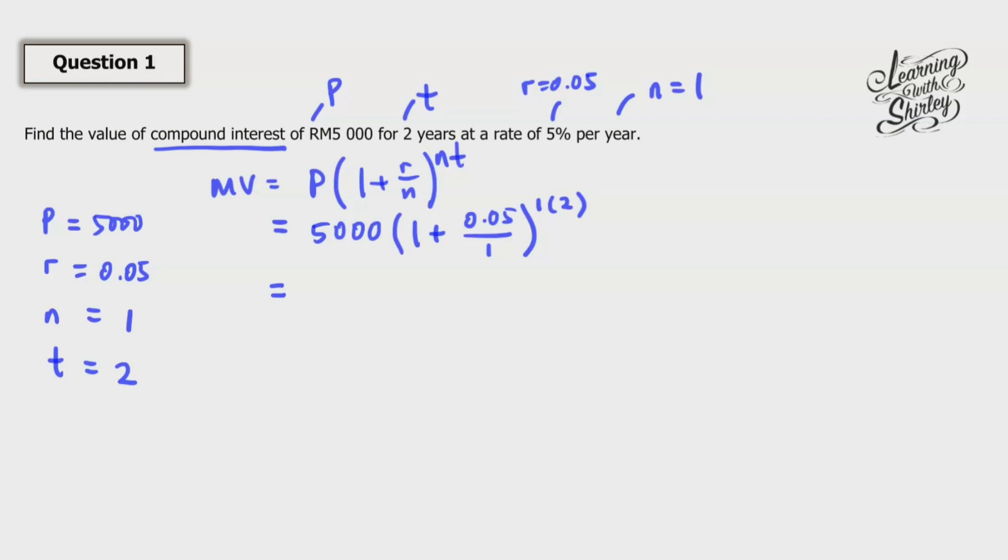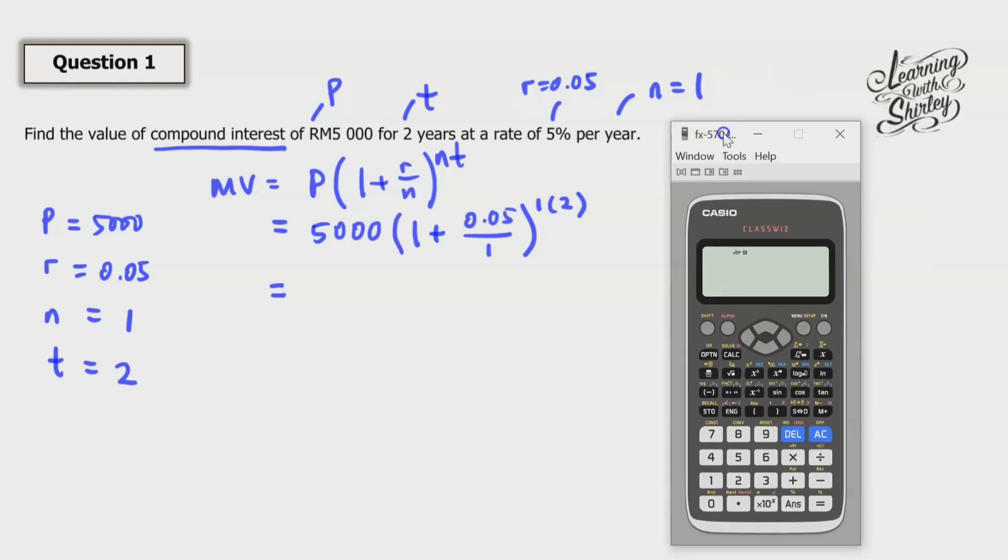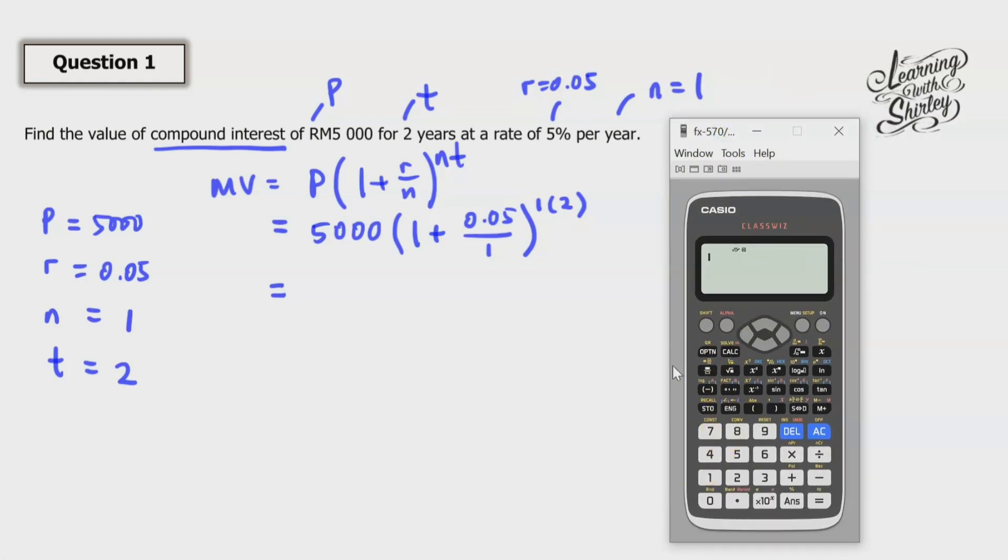So equals to, we're going to use the calculator. So this is the calculator. So I'm going to calculate the bracket first. So 1 plus 0.05.